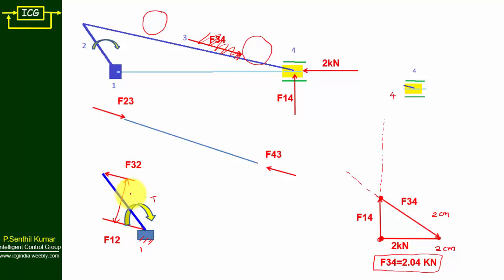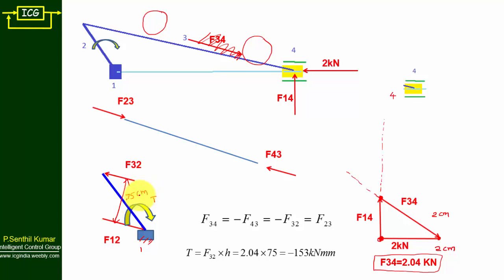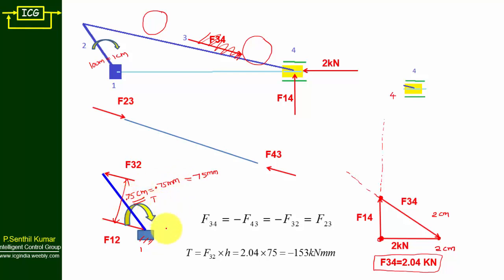Both F32 and F12 are parallel and opposite — this forms the couple. Measure the perpendicular distance between them using the scale. You will get approximately 0.75 centimeters, which equals 75 mm, since we took 100 mm as 1 centimeter. This perpendicular distance h equals 75 mm and is the moment arm for calculating torque: T equals F32 times h.